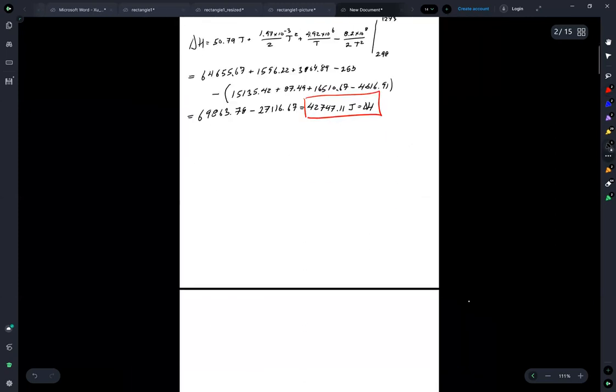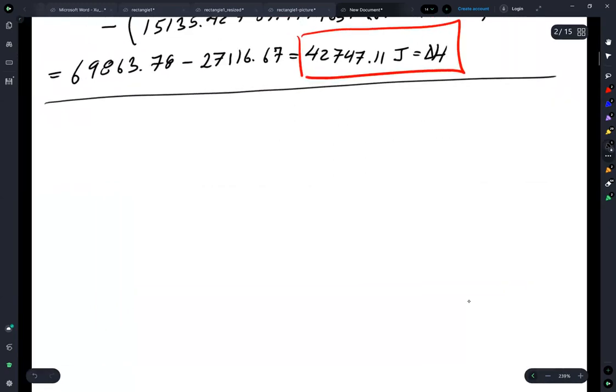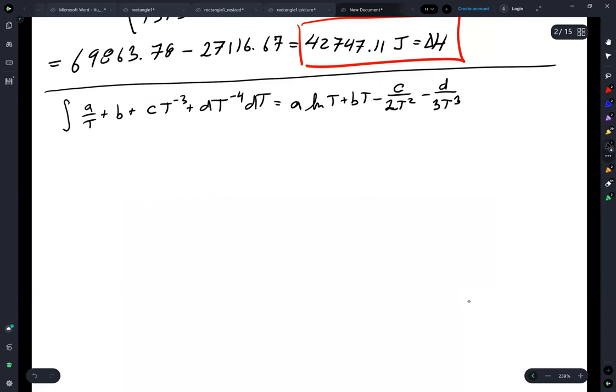Okay, moving on to the entropy, see if I can get this all to fit on one page. The entropy means you're going to be integrating a over t plus b plus c t to the minus three plus d t to the minus four dt, which is equal to a log of t plus b t minus c over 2t squared minus d over 3t to the third plus a constant.